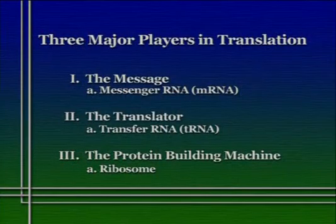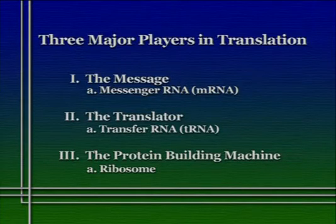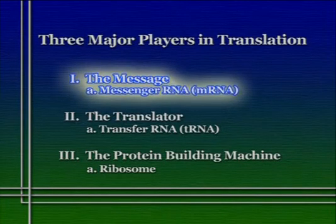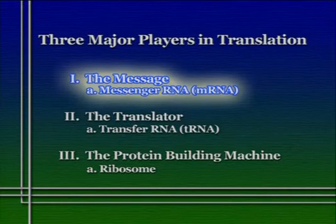The process of translation involves three major players. First, there's the message. Second, there's the translator. And third, there's a protein-building machine. It's really relatively simple. The message, of course, is the messenger RNA. This is a long polymer that has no structure inherent in it other than the sequence of bases — a sequence of bases that specify codons that will eventually be used as a template for building the protein.